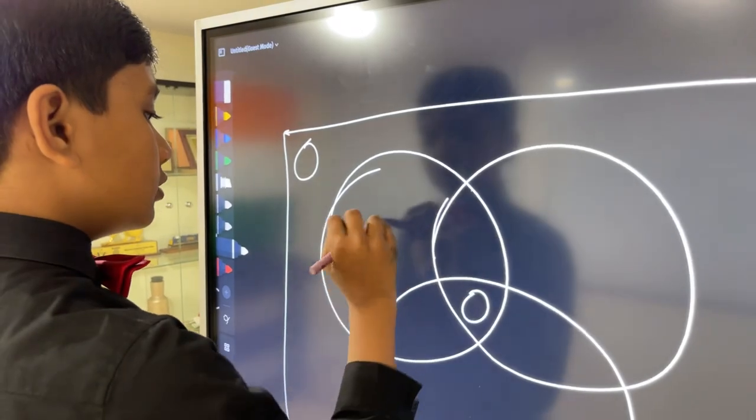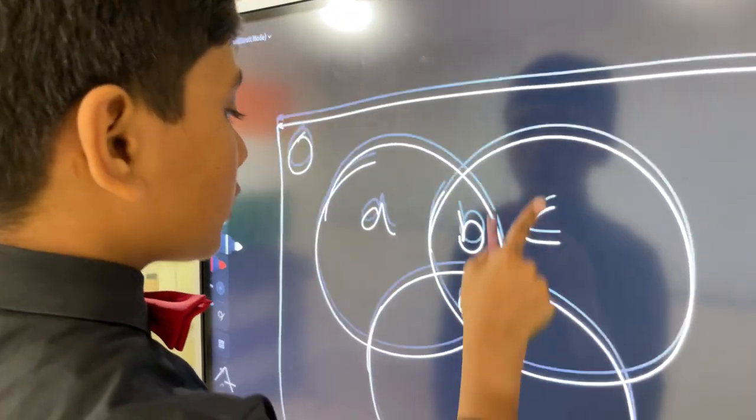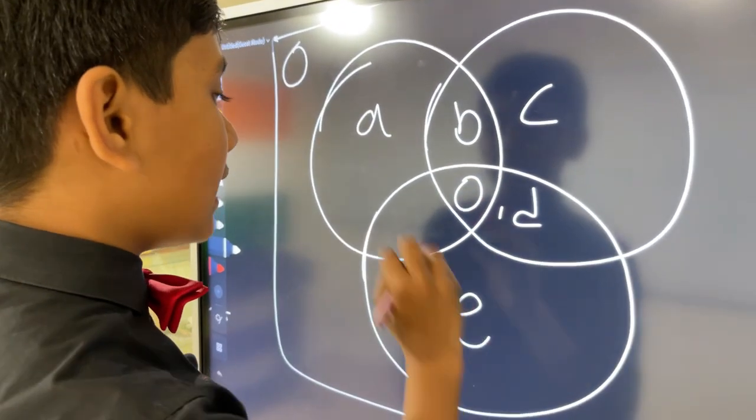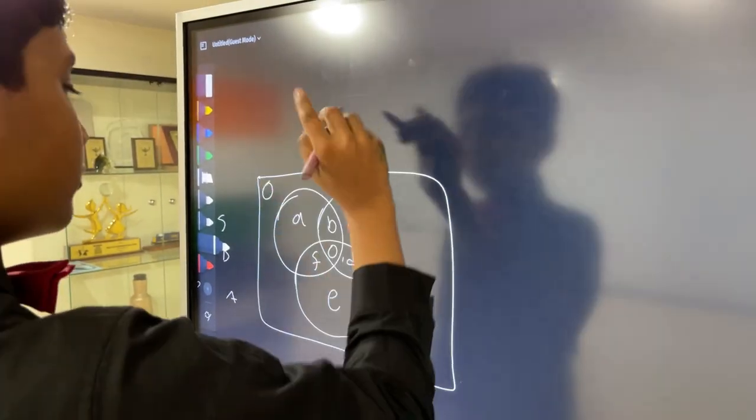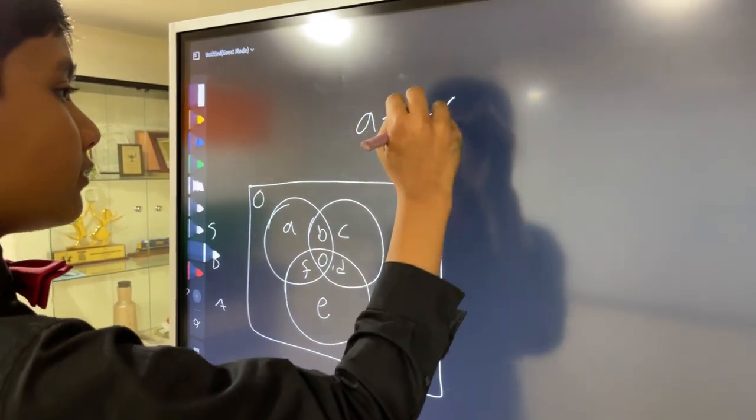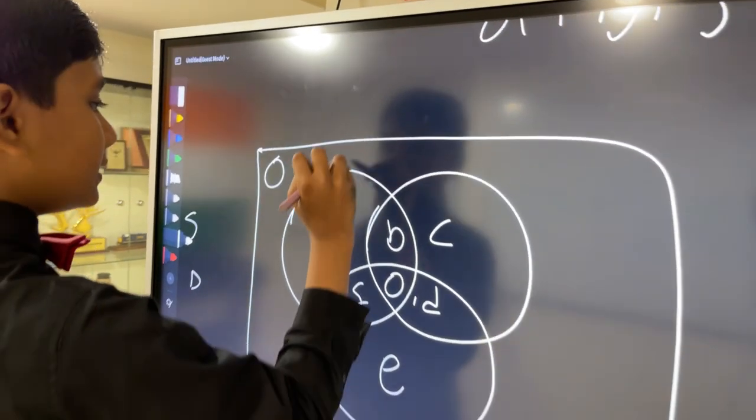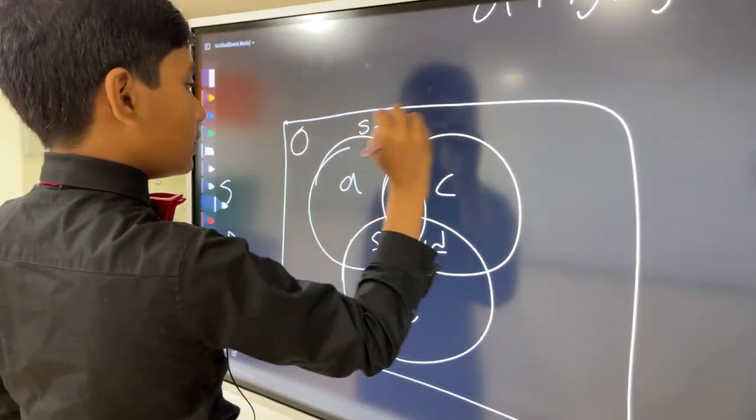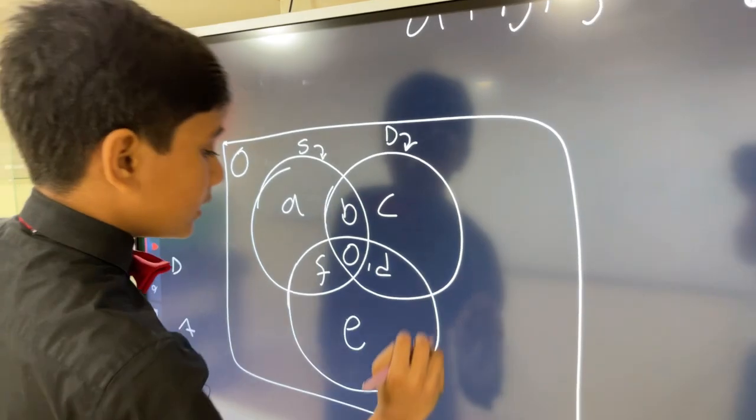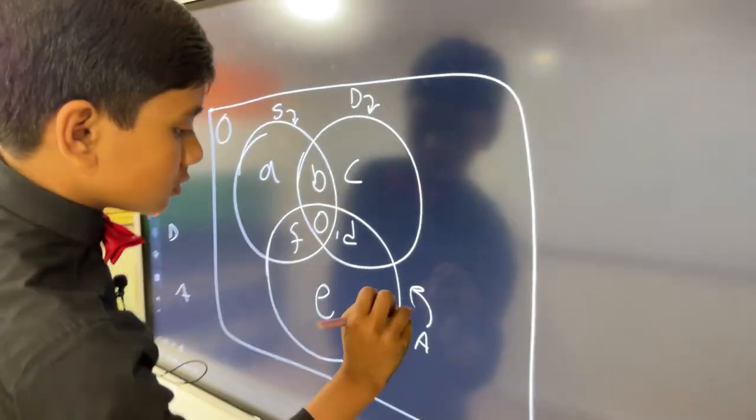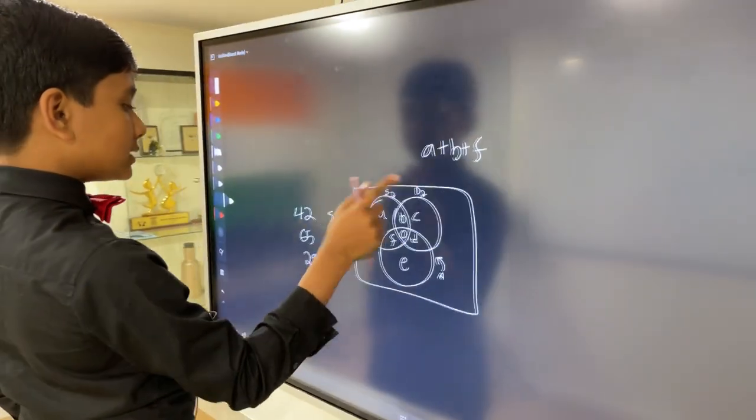So now what I'm going to do is label each part A, B, C, D, E, F. Alright, so we know A plus B plus F. Let's say this is the singing circle, this is the dancing circle, this is the acting circle. So A plus B plus F equals...